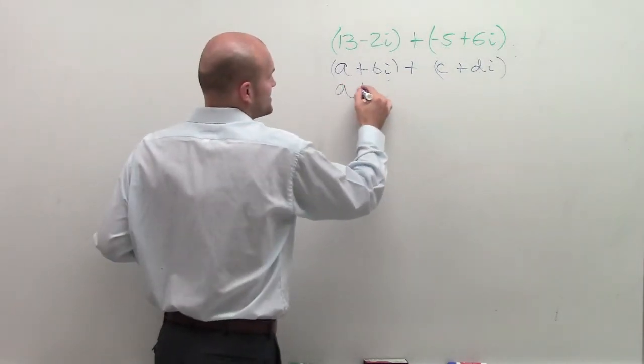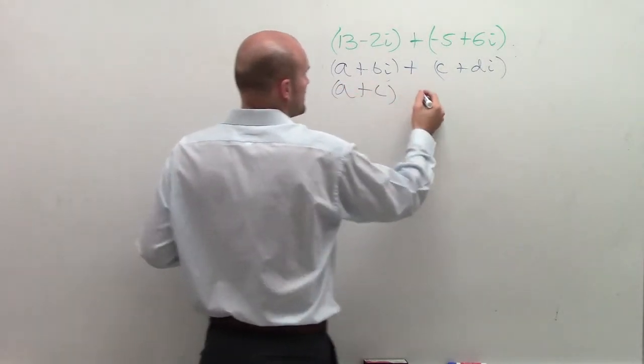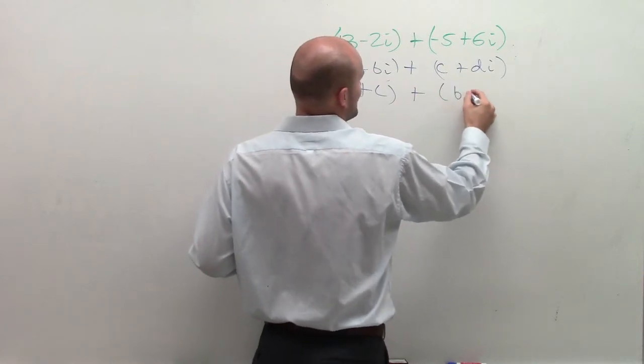So to add complex numbers, I can only add the reals, and I can only add the imaginaries.